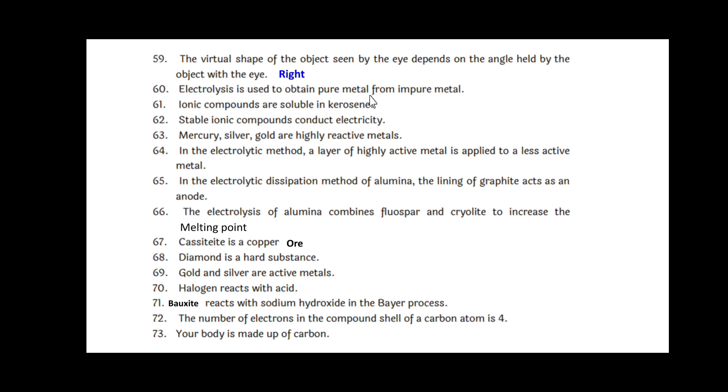Electrolysis is used to obtain pure metal from impure metal. Right. Ionic compounds are soluble in kerosene. That is wrong. Stable ionic compounds conduct electricity. That is wrong. Mercury, silver, gold are highly reactive metals. Wrong. In the electrolytic method, a layer of highly active metal is applied to a less active metal. Wrong. In the electrolytic dissociation method of alumina, the lining of the graphite acts as an anode. That is wrong. The electrolysis of alumina combines fluorspar and cryolite to increase the melting point. Wrong. Cassiterite is a copper ore. This is wrong. Diamond is a hard substance. It's right.